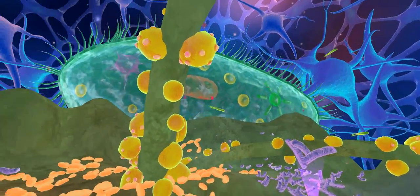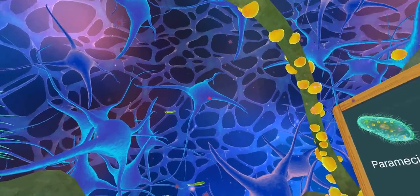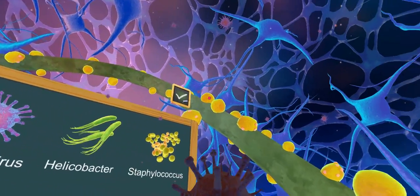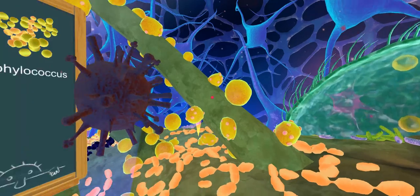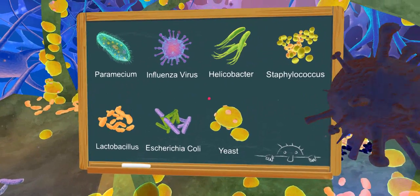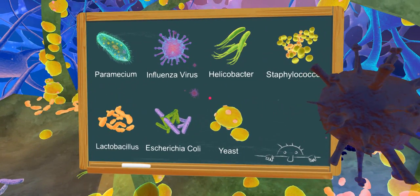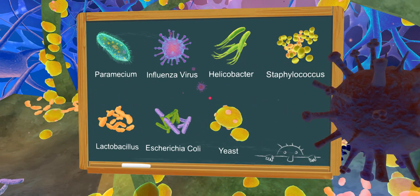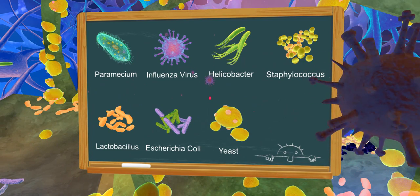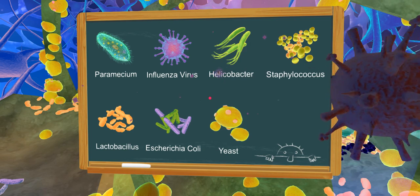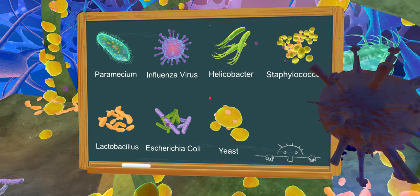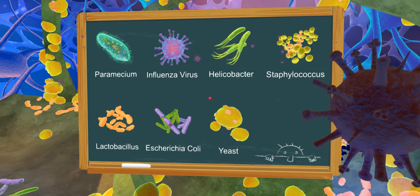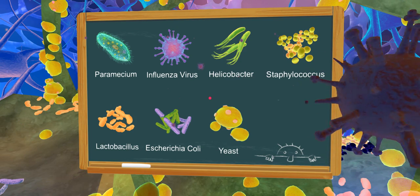Microorganisms are very tiny living things. They are so small that you need a microscope to see them. Some microorganisms are harmful to us, but others are helpful to us. There are three types of microorganisms, bacteria, fungi, and viruses. Let's explore in this virtual micro-world.